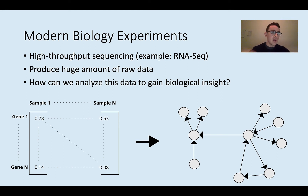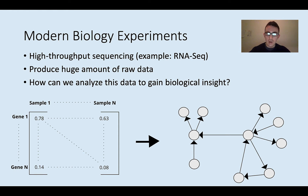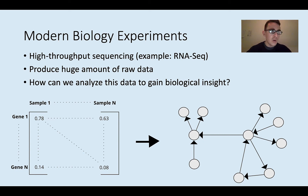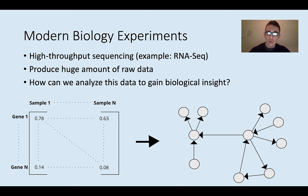I put this diagram as an example of one kind of bioinformatics challenge I'm working on, which is called network inference. In network inference, you have transcriptomic data about the expression levels of a bunch of different genes across a bunch of different samples. The goal is to figure out how to take that data and infer the structure of the underlying gene regulatory network that produced it. This is an example of an ongoing challenge in bioinformatics and computational biology.